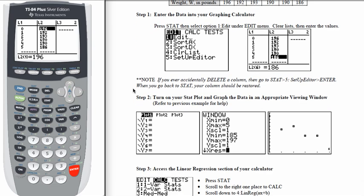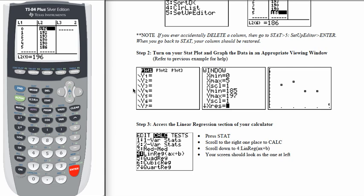Once you do that go on down to step 2 which is to turn on your stat plot and graph the data in an appropriate viewing window. Let's go back to Y equals. To turn on the stat plot you're going to arrow up to plot 1, hit enter, and then return to Y1.